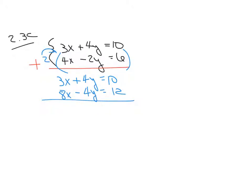Alright, so now let's add these. We have 11x. These give me 0 equals 22. Divide by 11. Divide by 11. My x equals 2.